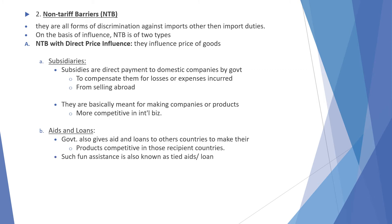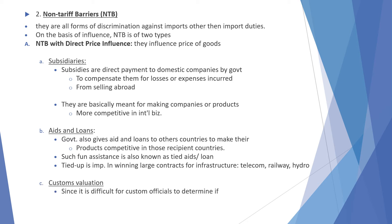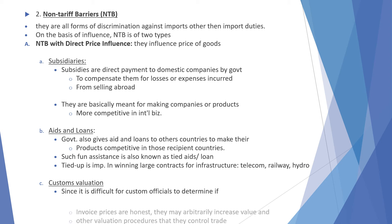Next are aids and loans, where the government gives aid and loans to countries to make their products competitive in those recipient countries. Such financial assistance is also known as tied aid or loan, which is important in winning large contracts in infrastructure — for example, telecom, railway, and hydro. Next is custom valuation, where it is difficult for customs officials to determine if invoice prices are honest; they may arbitrarily increase the value through other valuation procedures to control trade.